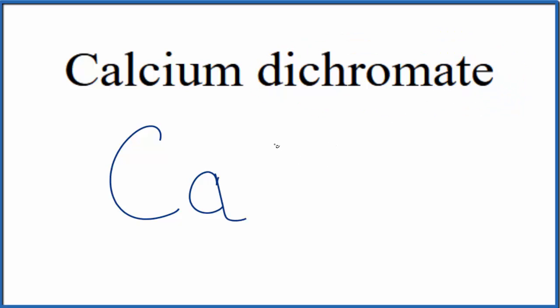So either you memorize that the dichromate ion is Cr2O7, and the whole thing has a two minus ionic charge, or if you're allowed, you can look up the dichromate ion on a table of polyatomic ions.